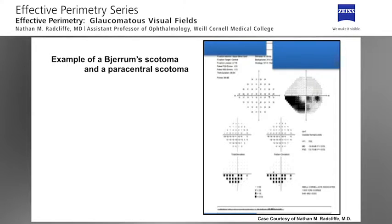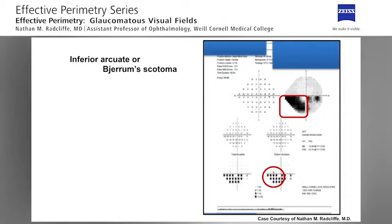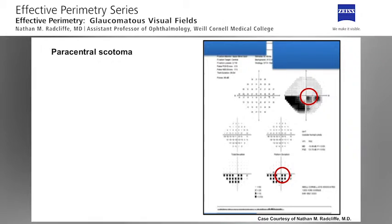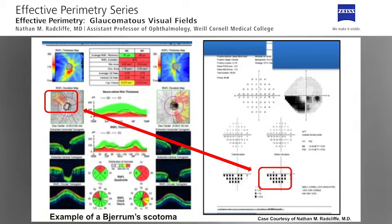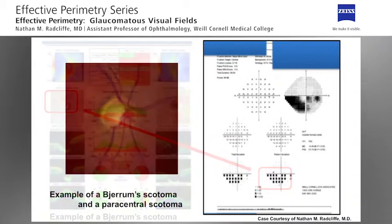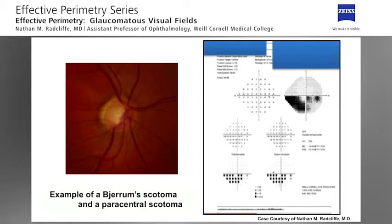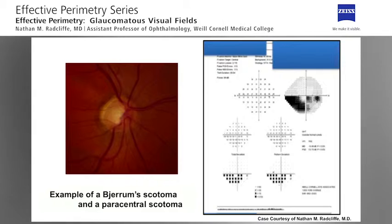This Humphrey visual field demonstrates two separate visual field defects. The first is a broad inferior arcuate or Bjerrum scotoma. The second is a smaller deep paracentral scotoma next to fixation. An examination of the Cirrus OCT demonstrates two superior retinal nerve fiber layer defects, each of which corresponds to the visual field defects. The optic nerve photograph demonstrates superior neuroretinal rim loss and two distinct retinal nerve fiber layer defects, again corresponding to the visual field loss.